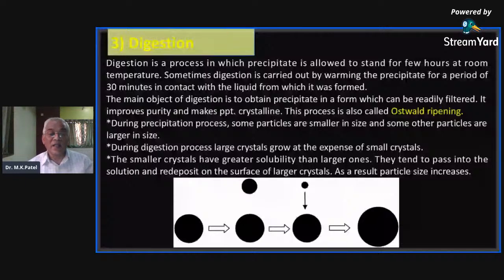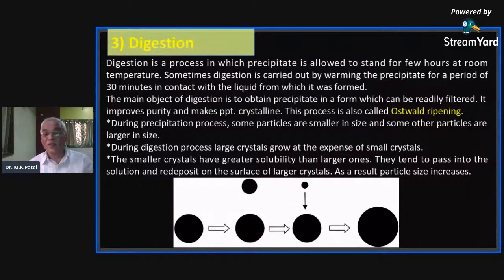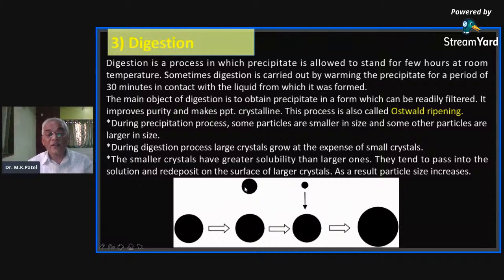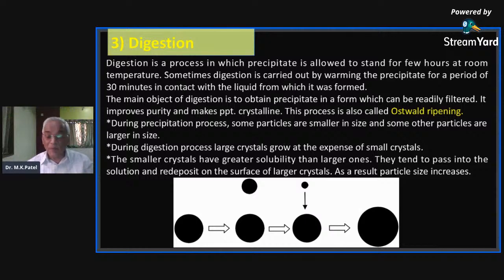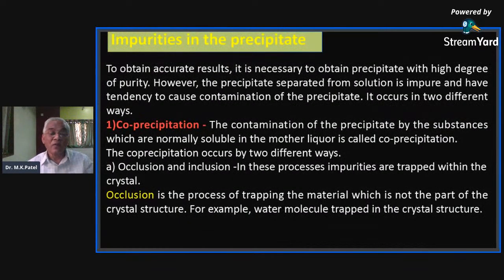During precipitation, particles of smaller and larger sizes are formed. In digestion, the smaller crystals have greater solubility and tend to pass into solution, then redeposit on the surface of larger crystals. As shown in the figure, a larger crystal develops into an even larger crystal as the smaller, more soluble crystal deposits on its surface. As crystal particle size increases, the precipitate is also in a better form.